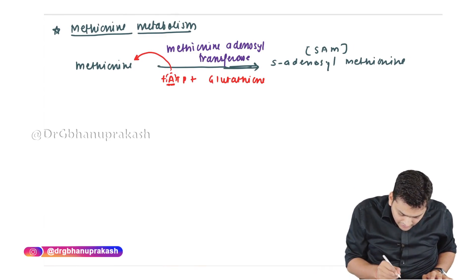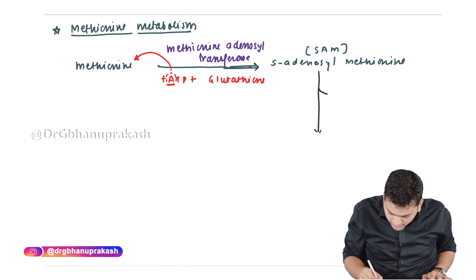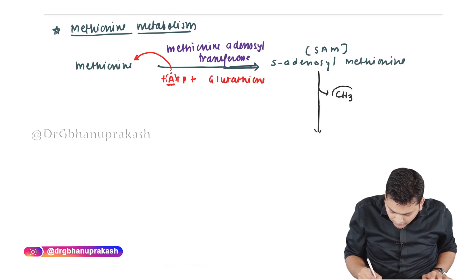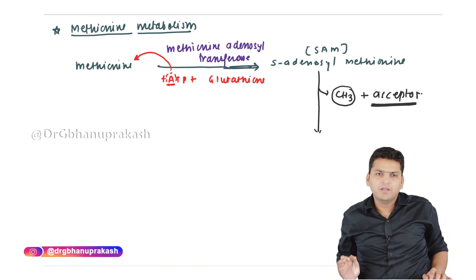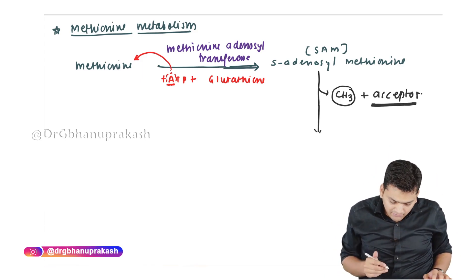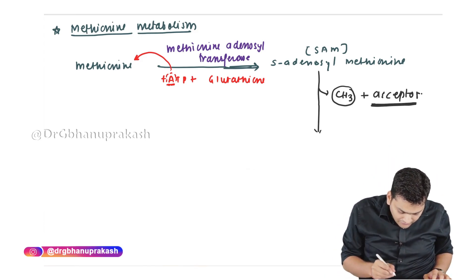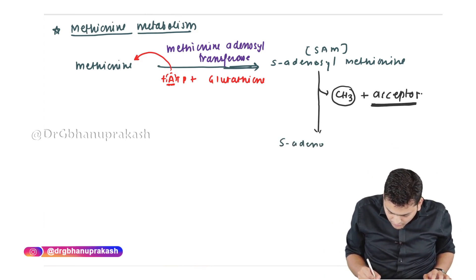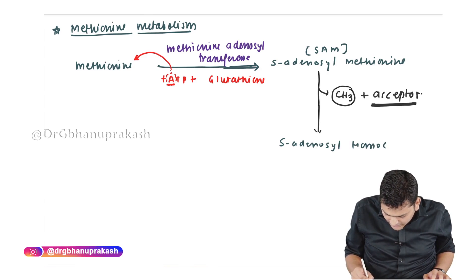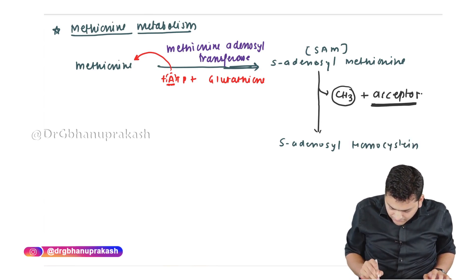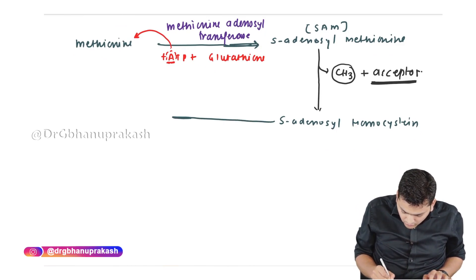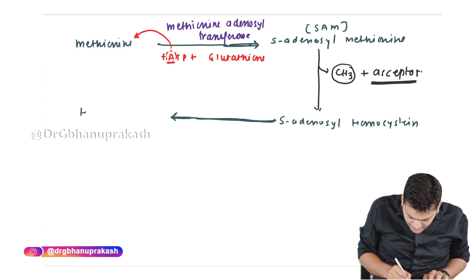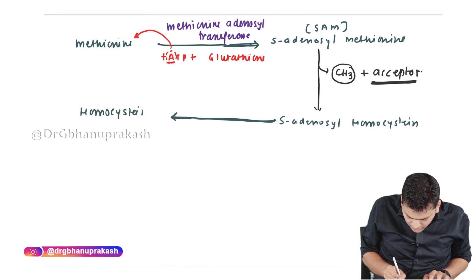S-adenosyl methionine is a methyl donor. It will donate the methyl group to whomever is the acceptor. When the methyl group is taken out from SAM, SAM converts into a similar molecule referred to as S-adenosyl homocysteine. This S-adenosyl homocysteine can then convert into a critical molecule called homocysteine.